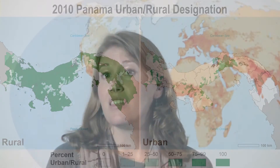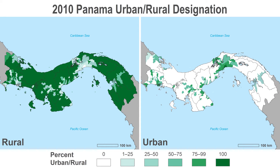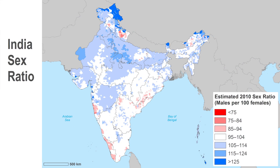These grids let users look at many different demographic breakdowns, such as the elderly population in urban areas, school-aged children, and women of childbearing age. For example, in the map of Panama on the left, we can see the percentage of rural population in 2010. On the right, the percentage of urban population. In the map of India's sex ratio, we can see a striking difference in the distribution of males and females across the country.